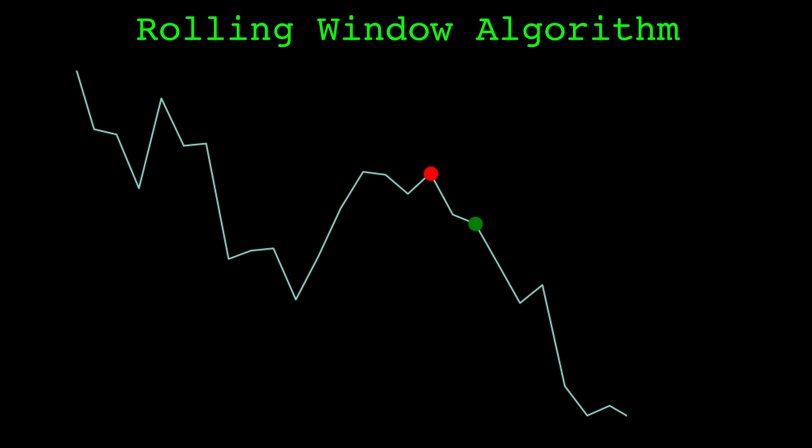It's important to note, since we are focusing on a trading application, these local tops and bottoms are identified with a lag equal to the order parameter. For example, the top of order 2, marked here in red, is not confirmed until the time marked in green.